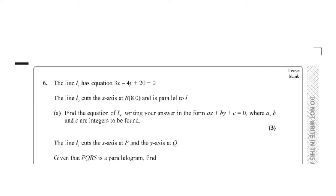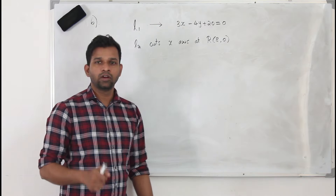Question number 6. The line L1 has the equation 3x minus 4y plus 20 equals 0. The line L2 cuts the x-axis at point R and L2 is parallel to L1. You need to find the equation of L2 and write it in the form Ax plus By plus C equals 0, where A, B, C are integers.